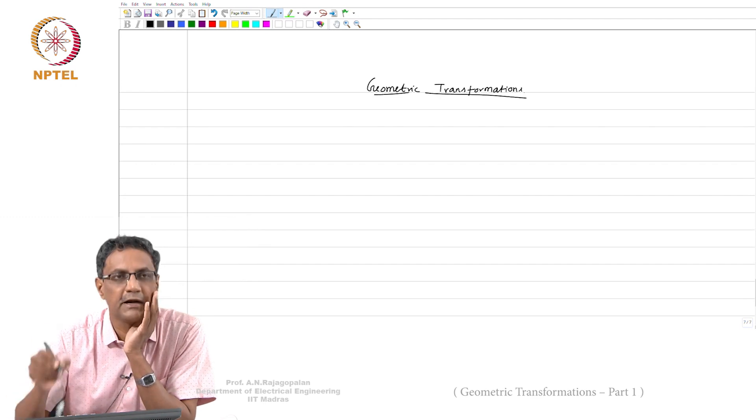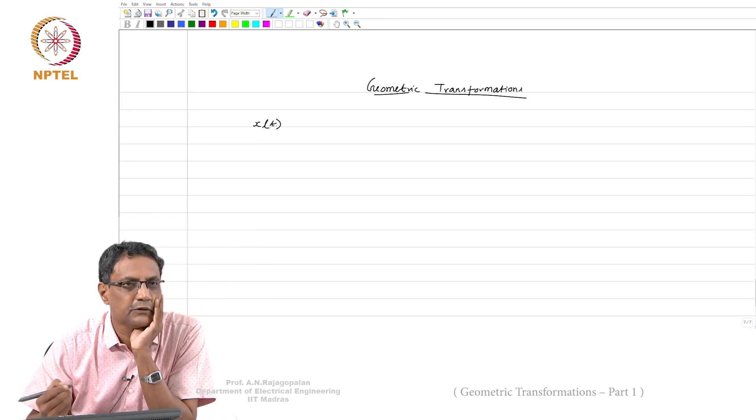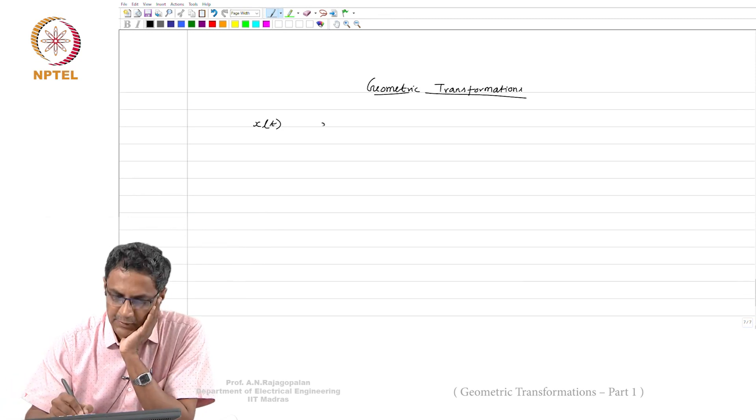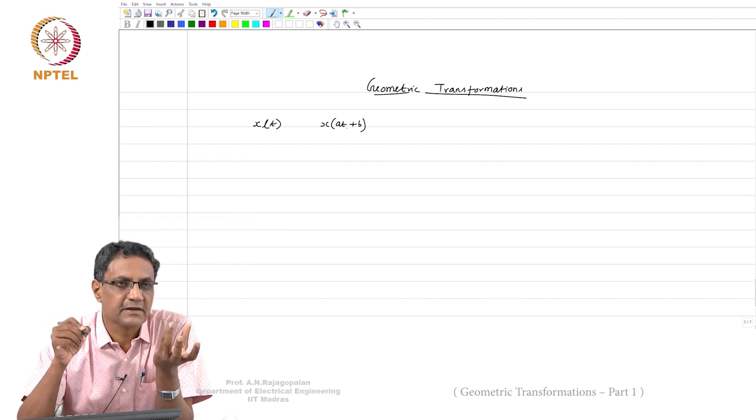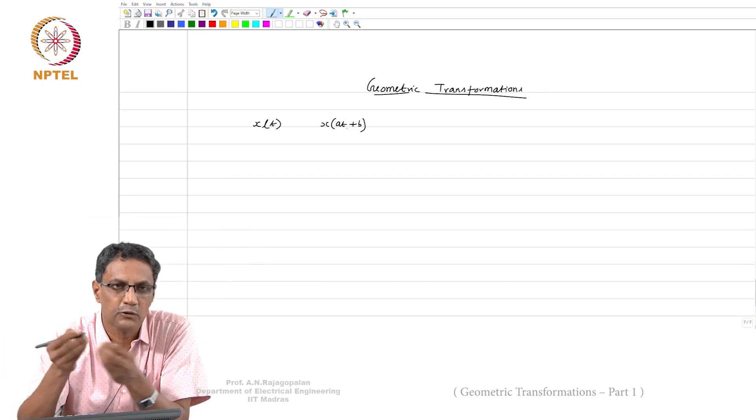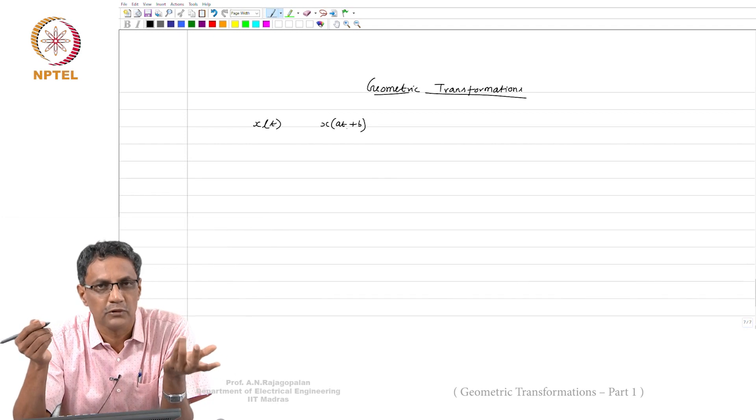What this really means is, for example if you had a 1D signal, suppose I gave you a 1D signal X of t, then when you talk about transformations, what kind of transformations do you do on a 1D signal? You may do something like X of at plus b. You could either scale, squeeze or stretch a signal, you can translate a signal. Typically the most general case is X of at plus b. This is what you normally do with 1D.